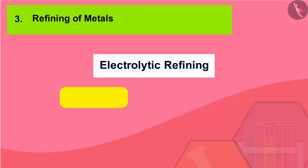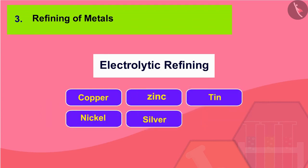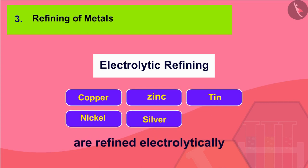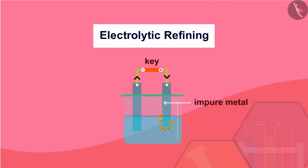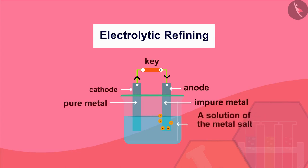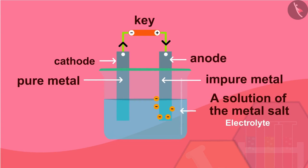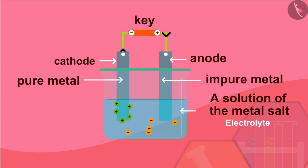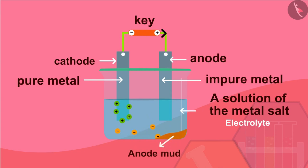Many metals like copper, zinc, tin, nickel and silver are refined electrolytically. In this process, the impure metal is made the anode and a thin strip of pure metal is made the cathode. A solution of the metal salt is used as an electrolyte. The apparatus is set up as shown in the diagram on screen. On passing the current through the electrolyte, the pure metal from the anode dissolves into the electrolyte. An equivalent amount of pure metal from the electrolyte is deposited on the cathode. The soluble impurities go into the solution, whereas the insoluble impurities settle down at the bottom of the anode and are known as anode mud.